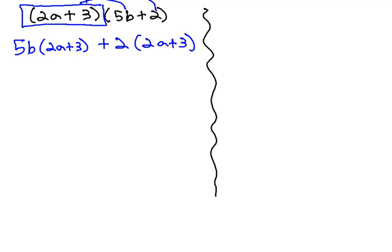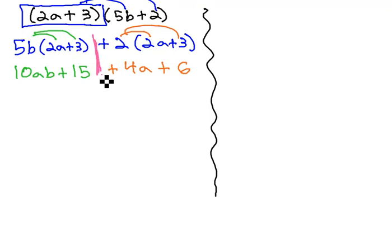After we've done this, we would then be able to distribute the 5b through, giving us 10ab plus 15b, and distribute the 2 through, giving us positive 4a plus 6. You'll notice that other than the very first step that we did, we almost looked at this problem in two completely different parts, the left and right side.